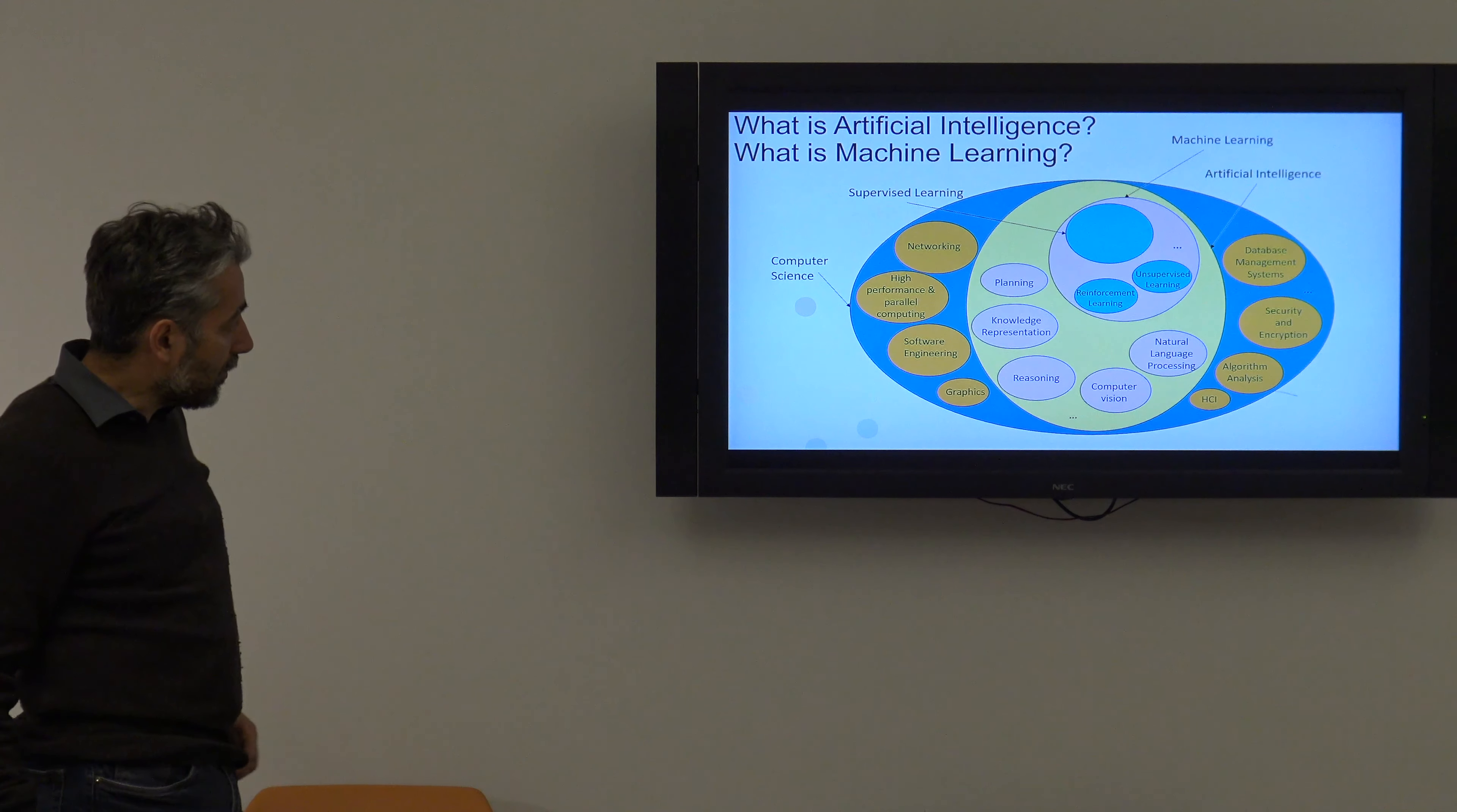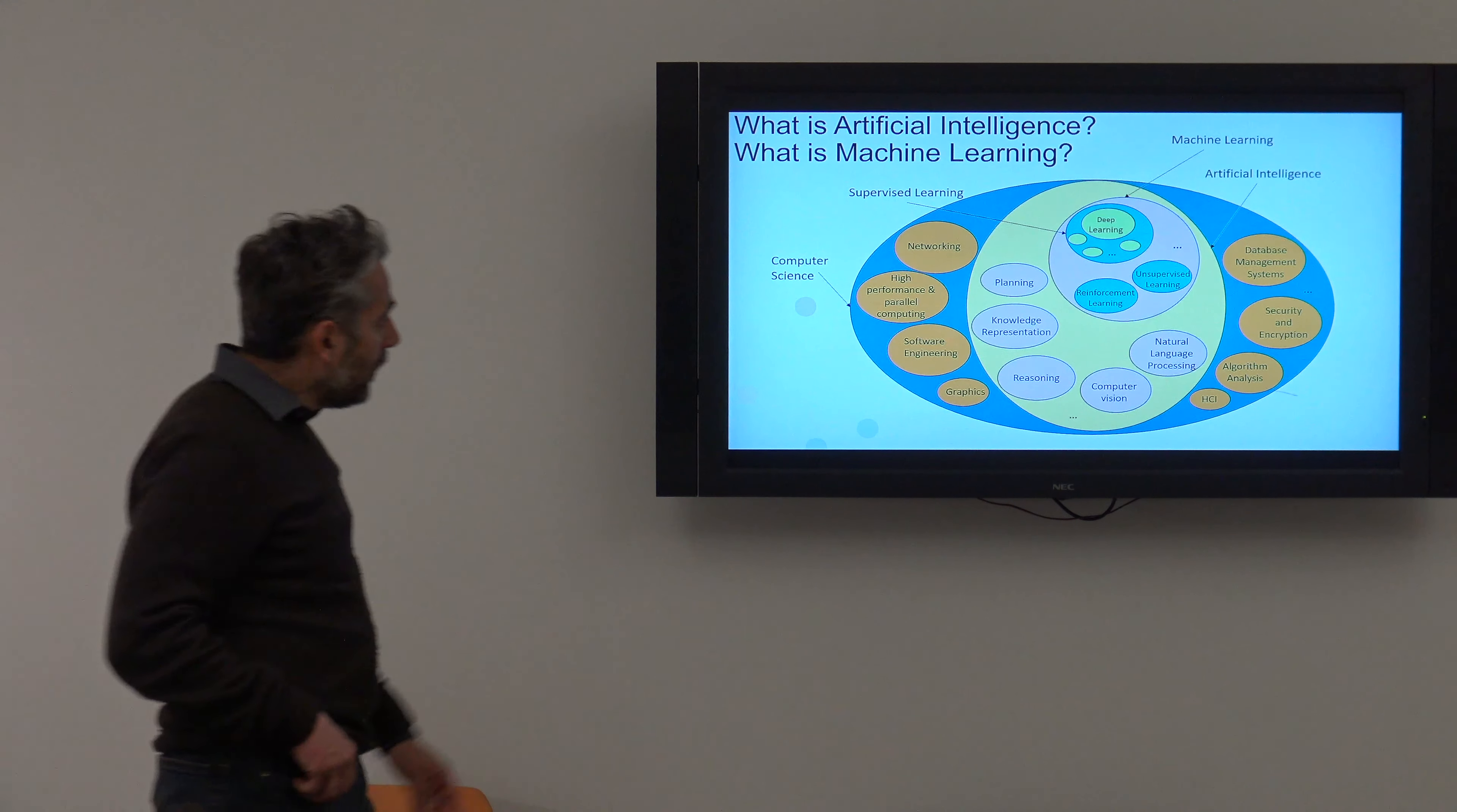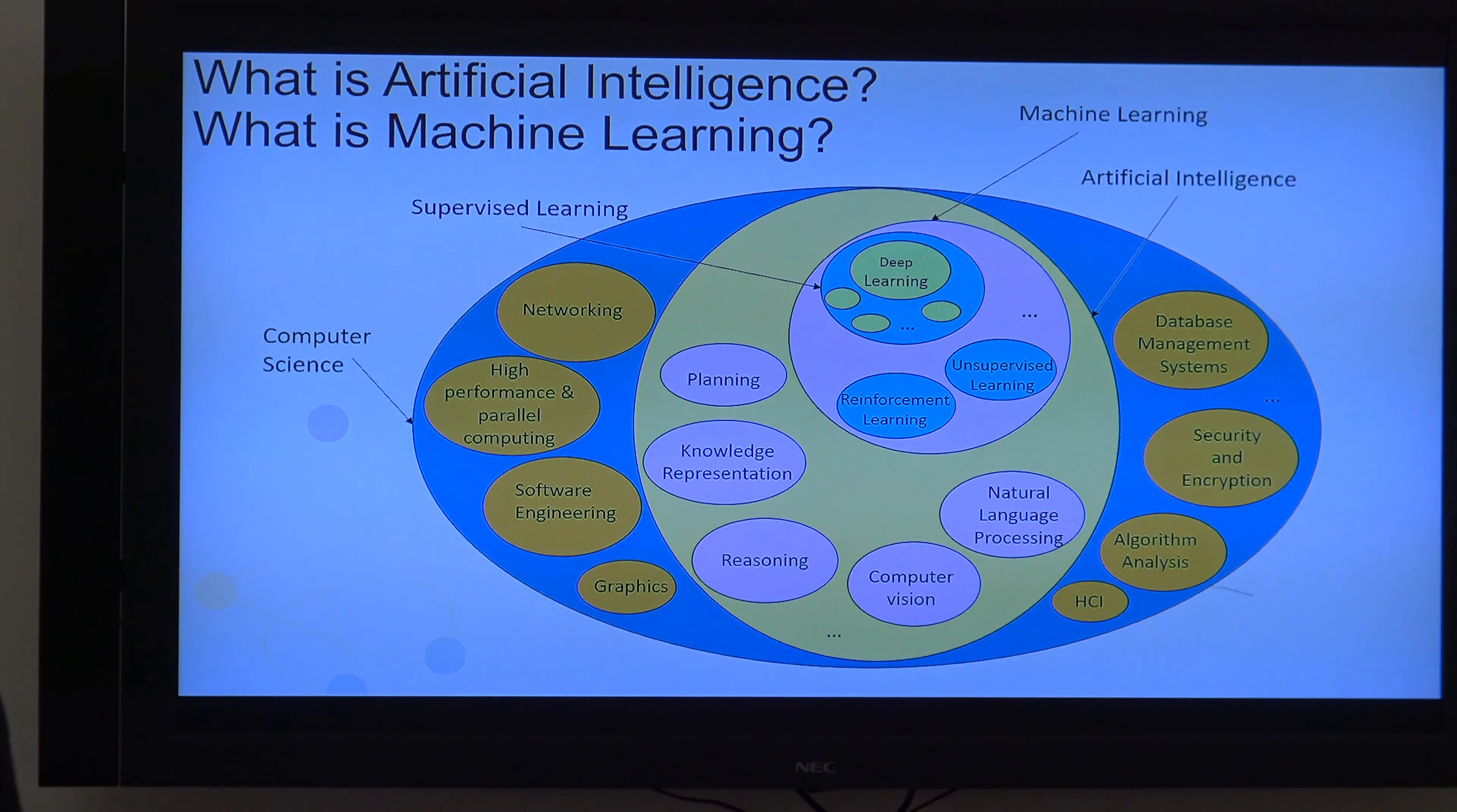Within AI, we have a subfield called machine learning, as I told you before. And it's equal to other subfields like planning, knowledge representation, how to do reasoning, computer vision, natural language processing. These are all within AI. Okay. So machine learning is one of them. And again, machine learning is not the most important one. Well, today it is. But I'm making it big because I'm going to zoom in.